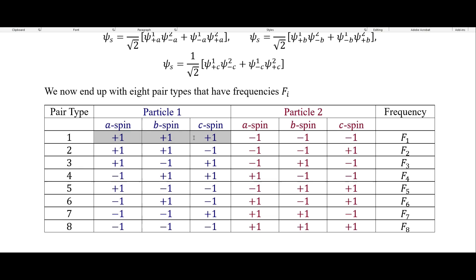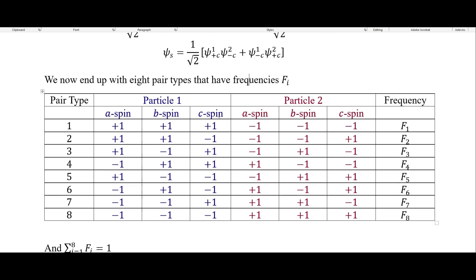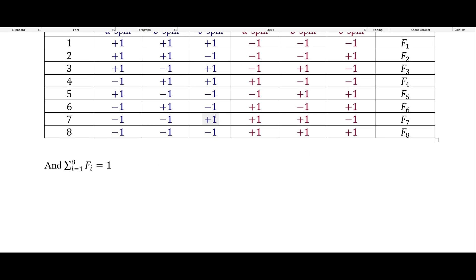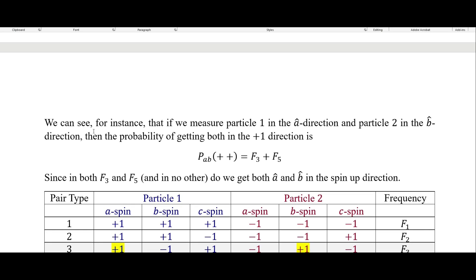So if particle one is plus one in all states, then particle two has to be negative one in all states. If particle one is plus one in the A and B spin, then negative one in C spin, then particle two has to be negative one in A and B spin, and plus one in C spin, and so on and so forth.